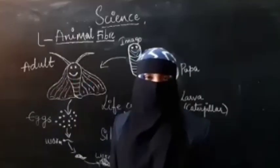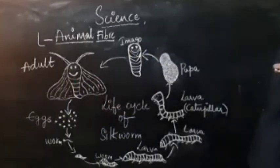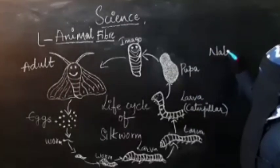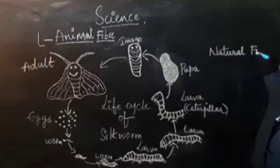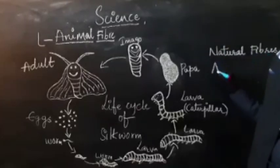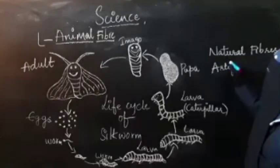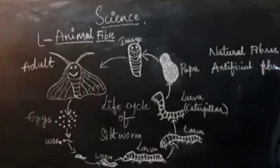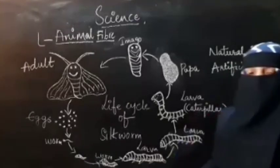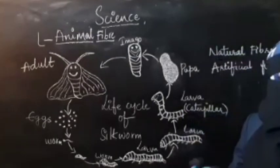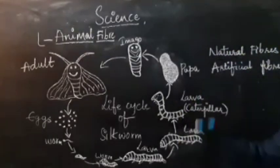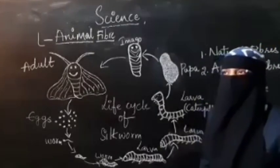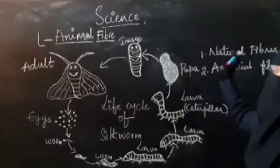First of all, what is animal fiber? In nature, two kinds of fibers are present: natural fibers and artificial fibers. Natural fibers are obtained from nature — either from plants or from animals. Artificial fibers are obtained from chemicals, or by combining chemicals with natural fibers.